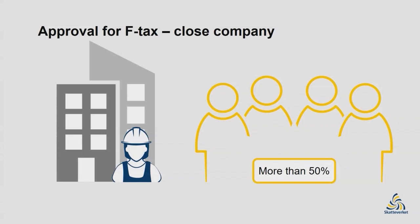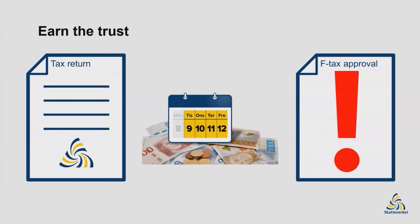When your company is approved for F-tax, it means that you are trusted to report and pay your taxes. You need to file your tax returns and pay your taxes on time. If you don't declare and pay these taxes, your company's F-tax approval may be withdrawn. This can make it difficult for you to get new assignments, as many companies only hire subcontractors with F-tax approval. Creditors may also check for F-tax approval in connection with loan applications.